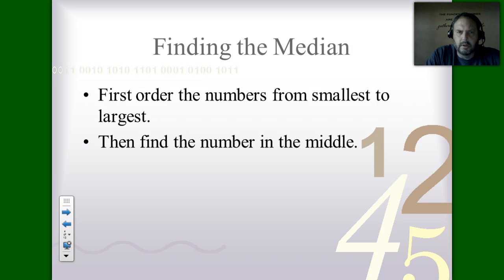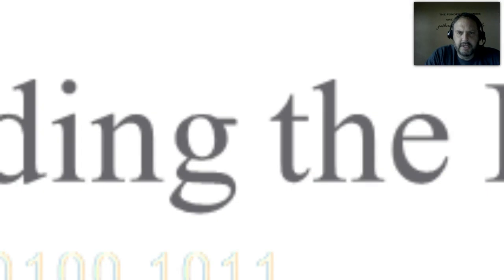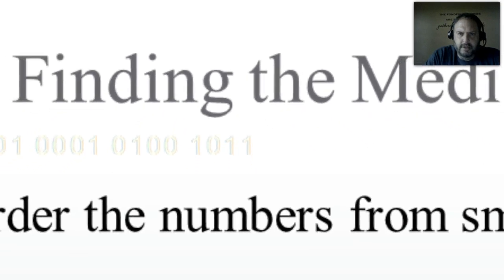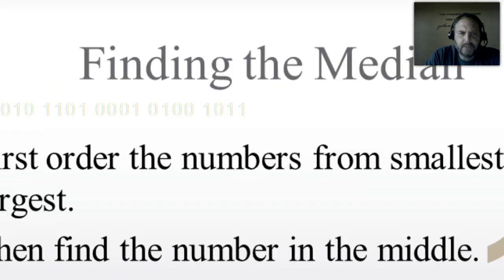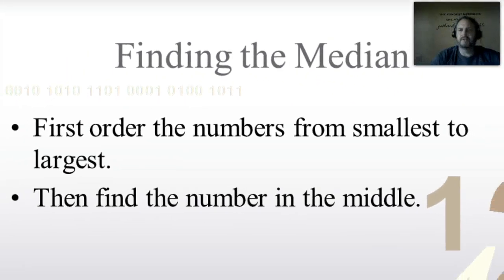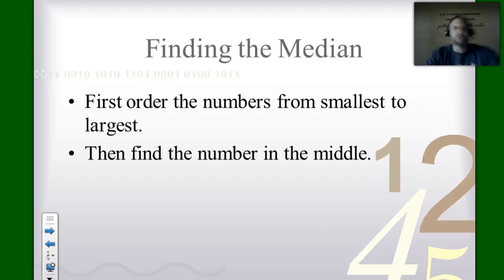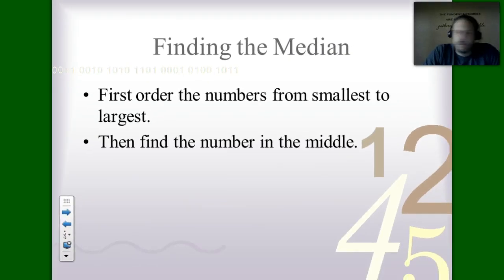The next measure of central tendency is median, which is the number in the middle. To find it there are two steps: first, order the numbers from smallest to largest, and then start crossing out the numbers on the outside to find the number in the middle.